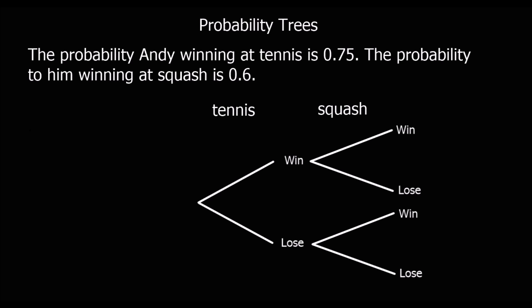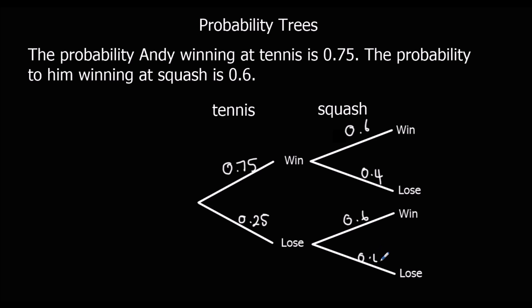Now let's have different events on the branches. Andy's going to play tennis and squash. The probability of him winning at tennis is zero point seven five, so win at tennis is zero point seven five. We can work out loss at tennis because it's got to add up to a whole — zero point seven five plus zero point two five makes a whole. The chance of winning at squash is zero point six, and the chance of losing at squash is zero point four. We can work out the combined probabilities by multiplying along the branches.